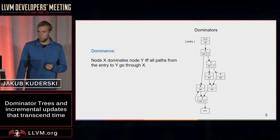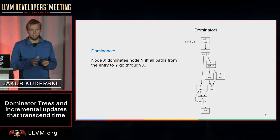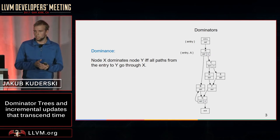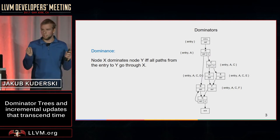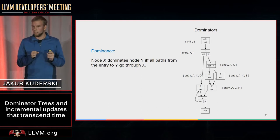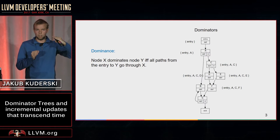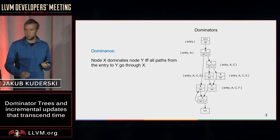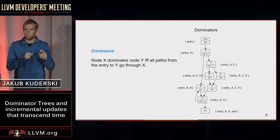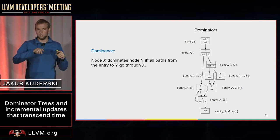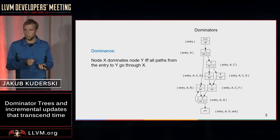...such that node X dominates node Y if all of the paths from entry to Y go through X. For example, entry dominates itself, as every reachable node dominates itself. Entry also dominates all other nodes. In a diamond situation where node C can go to either D or E and then to F, because we can make a decision at C, neither D nor E dominates F. And because we can reach B straight from A or take the right path and end up in B at the end, A also dominates B.